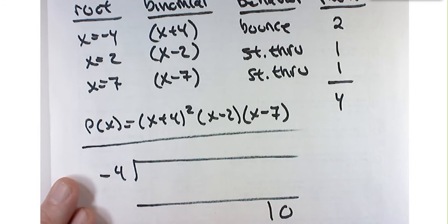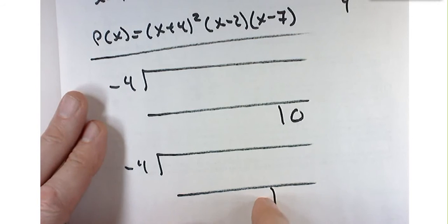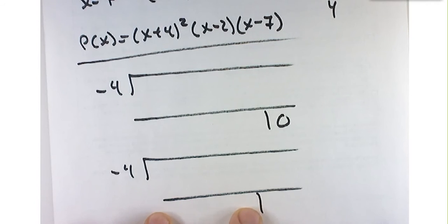And then this would be a cubic polynomial, and then you've got to do the root at negative 4 again, and then you'll get a quadratic polynomial, and at that point, maybe you can factor it. I don't know.